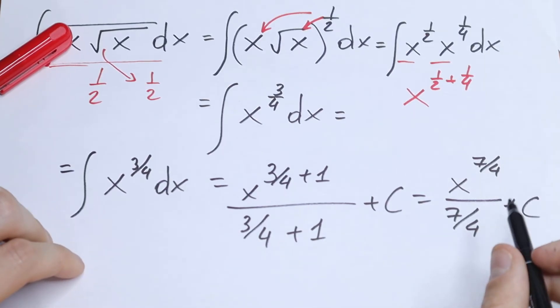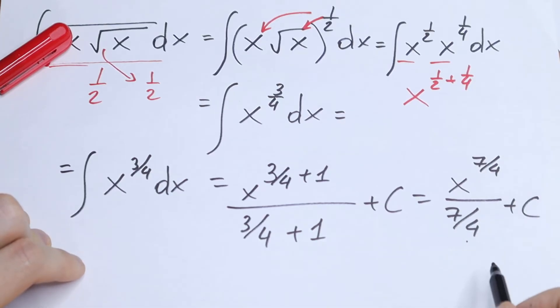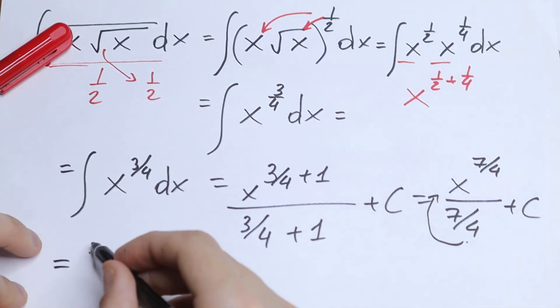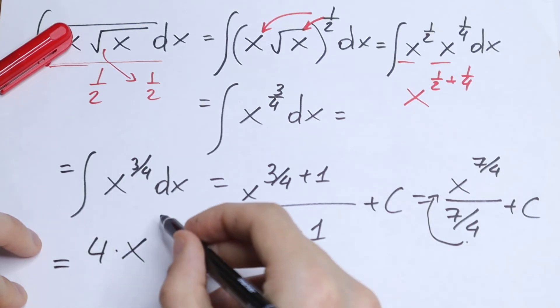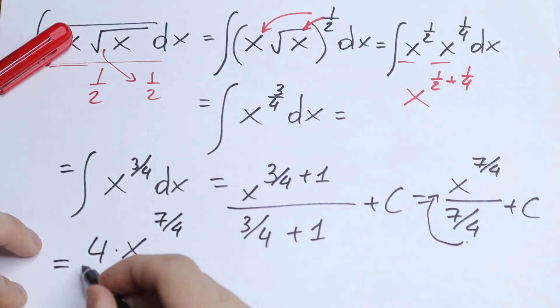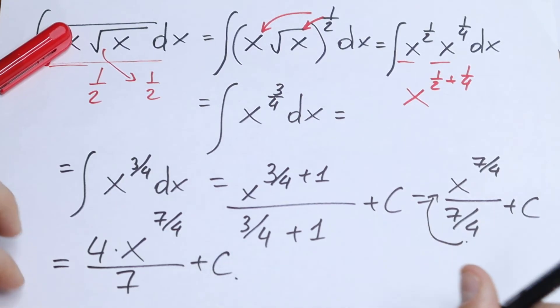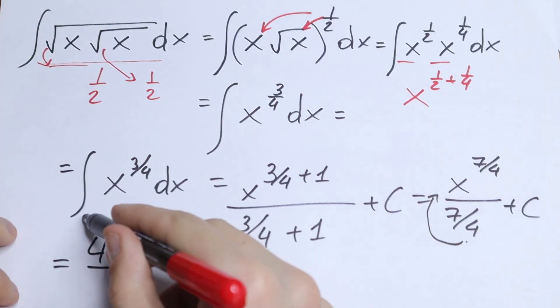We can simplify this more because we have 7 fourths. If we divide this, this 4 jumps to our numerator. And as a result we will have the final answer 4 times x to the power 7 over 4, over 7, and plus c. And this will be our answer.